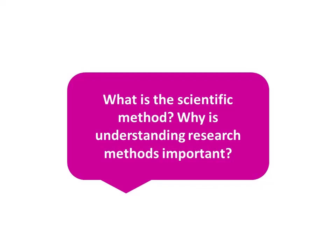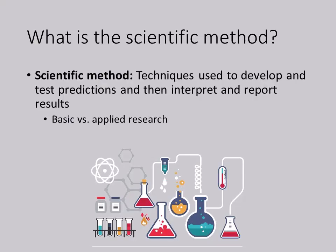What is the scientific method, and why is understanding research methods so important? Social psychologists rely on this method to investigate social behavior. This process involves developing and testing predictions about social behavior, and then interpreting and reporting the results to the scientific community.